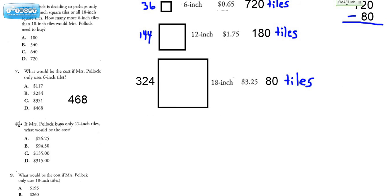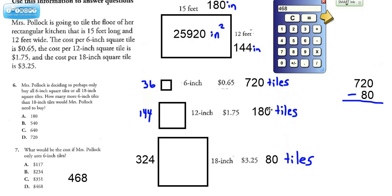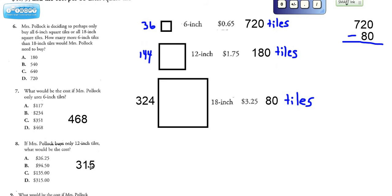Now if we look at number eight, if we're using now 12 inch tiles, we need 180 of those tiles to cover the floor. 180 times this amount, $1.75. And we get $315. Take a look and see which choice matches up with that. It looks like D.